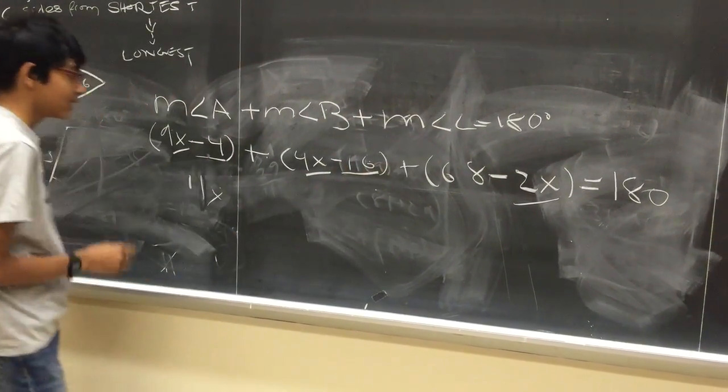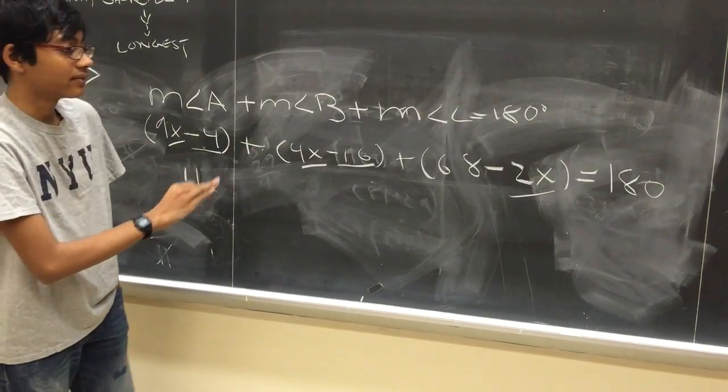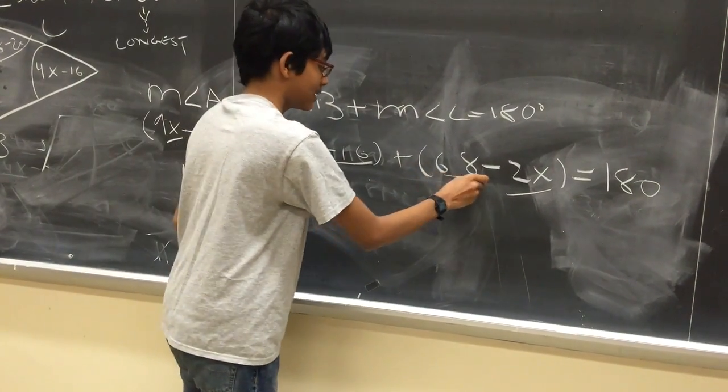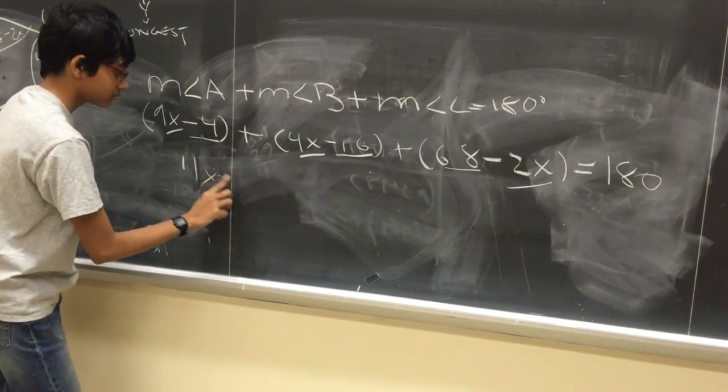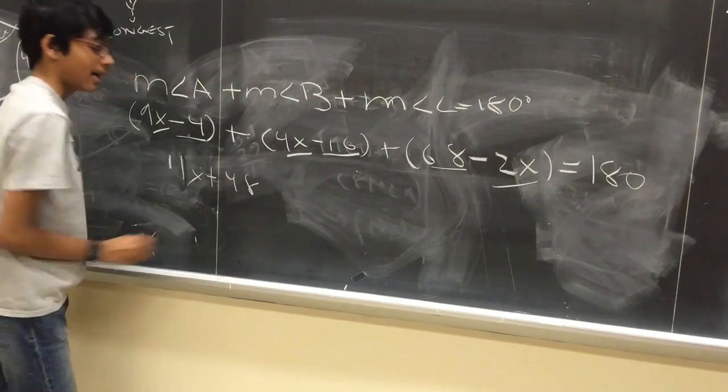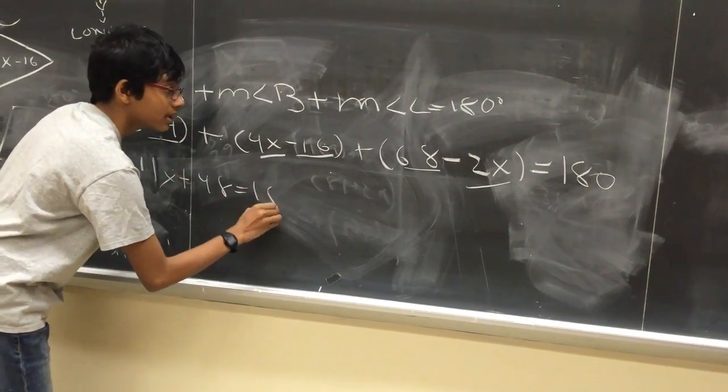And what we're going to do is add the numerical numbers. Minus 4, negative 16 gives us negative 20. We add that to 68, we get positive 48. And that equals 180.